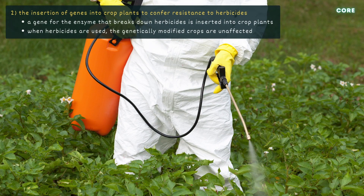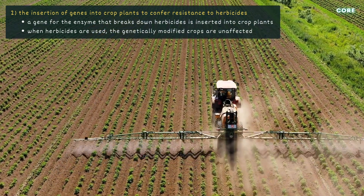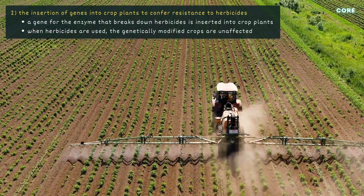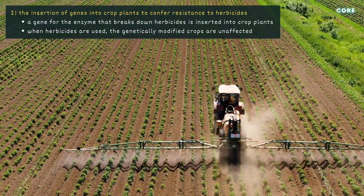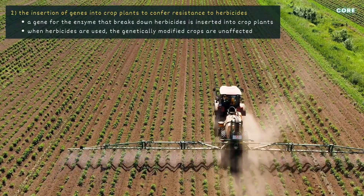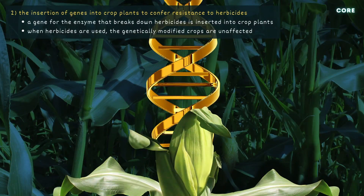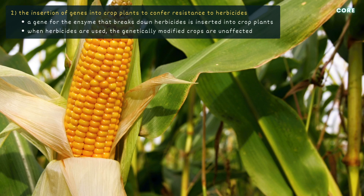The second example is the insertion of genes into crop plants to confer resistance to herbicides. Some herbicides, which are chemicals used to kill weeds that compete with crop plants for resources, also harm the crops themselves. To get around this issue, a gene for an enzyme that breaks down the herbicides is inserted into crop plants like maize, corn and soy. This means that when the herbicides are used, the genetically modified plants are unaffected.